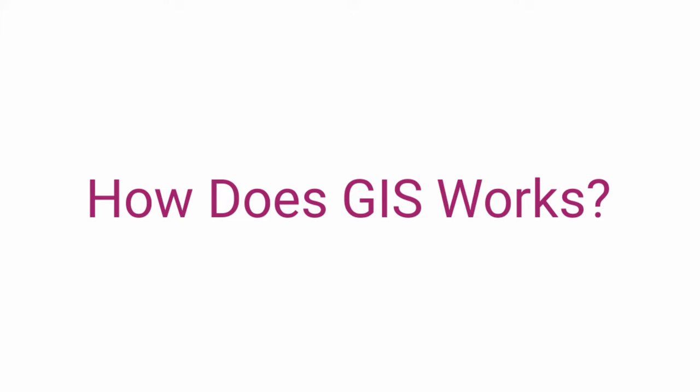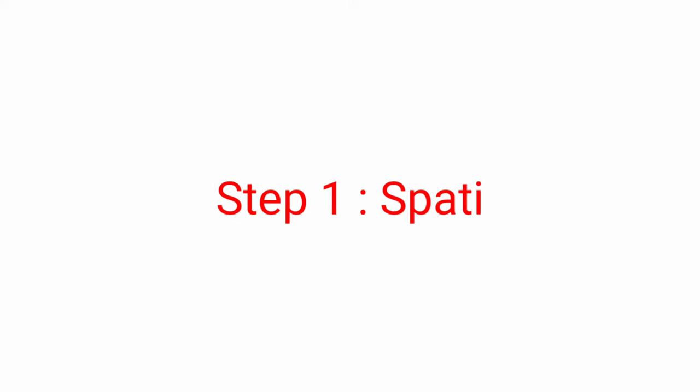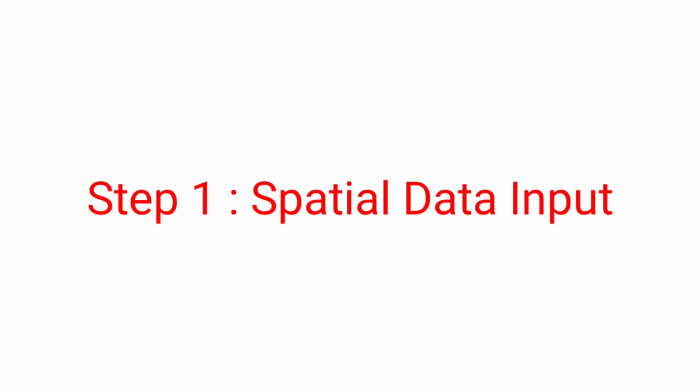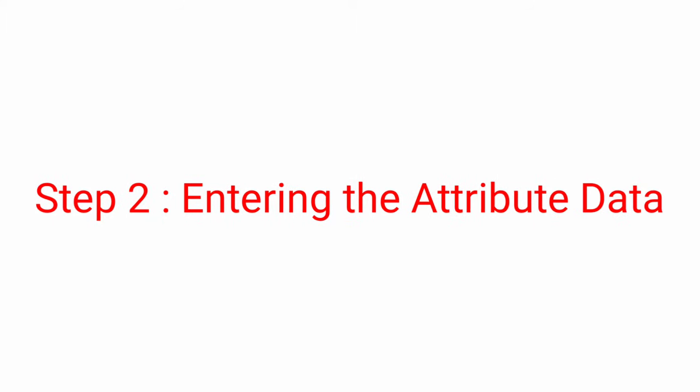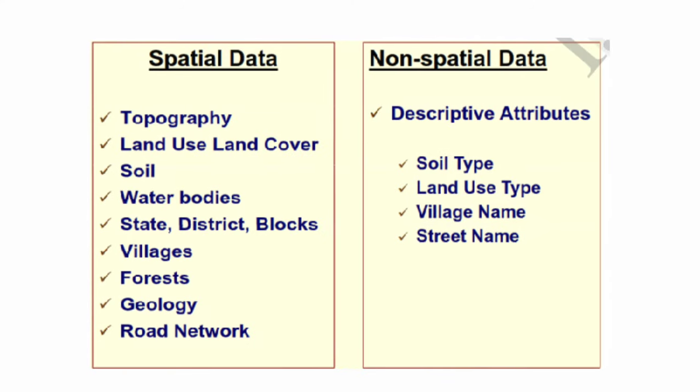The next question arises: how does a GIS work? The sequence of activities involved in GIS-related work are as follows. The first is spatial data input, which refers to acquiring data from various sources. Data is to be sorted out before it is entered, and the purpose and aim of the maps should be studied thoroughly. The second step involves entering the attribute data — firstly the spatial data is entered, followed by the non-spatial or attribute data.